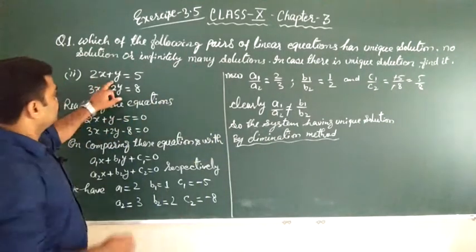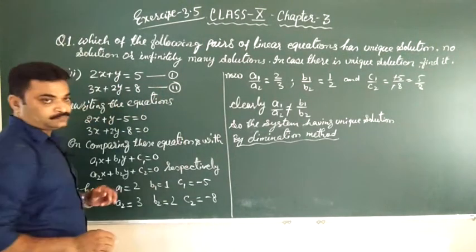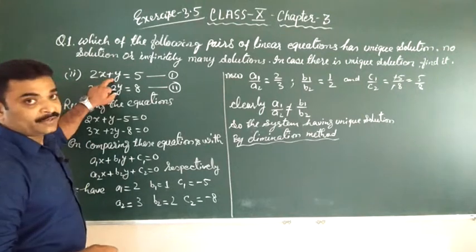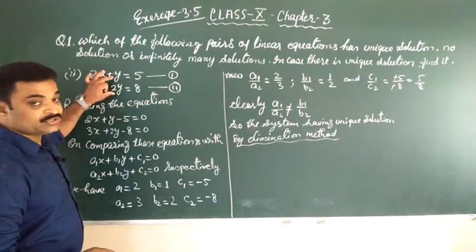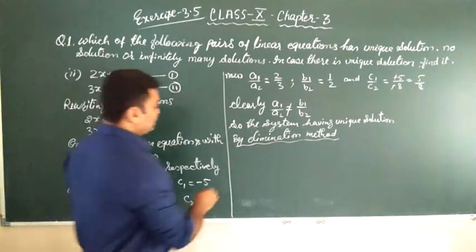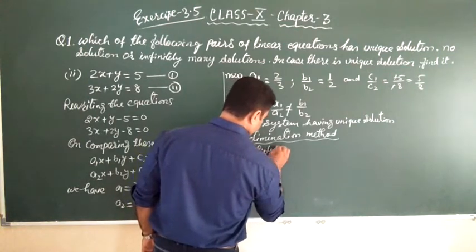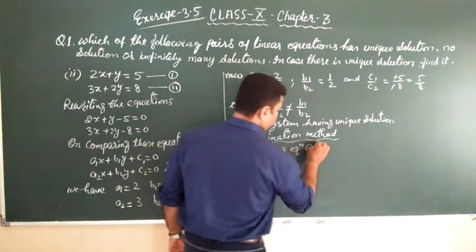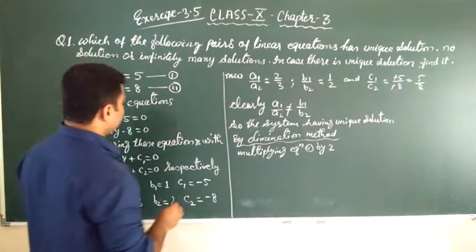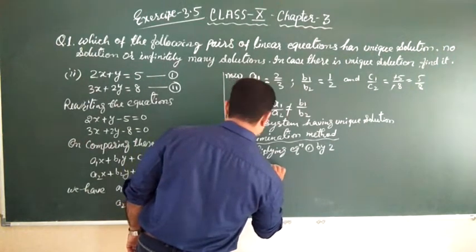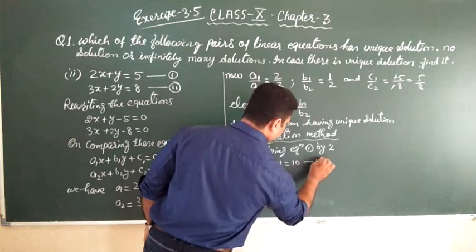Here students, it is equation number 1 and equation number 2. If we multiply equation number 1 by 2, then we can make the coefficient of y equal. Multiplying equation 1 by 2, what we get? 4x plus 2y is equal to 10. That is our equation number 3.